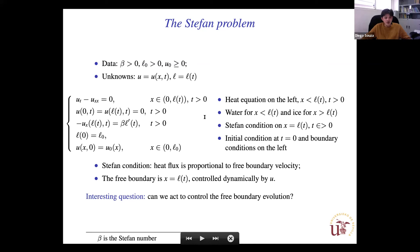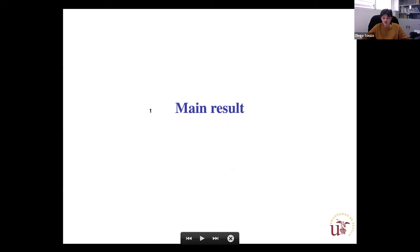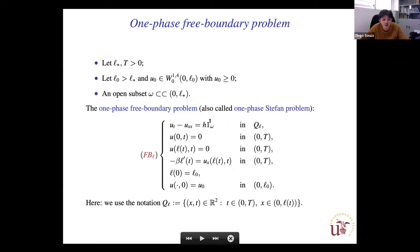The question we are interested in is whether it is possible to control this free boundary problem, where both u and the free boundary l are unknowns — so the domain is a non-cylindrical unknown. We introduce a control acting in a cylindrical part of this space-time domain, and we want to steer the solution and the interface to some target.